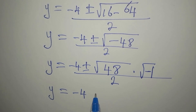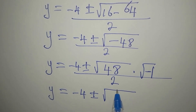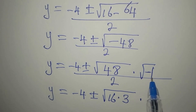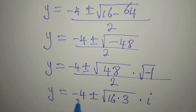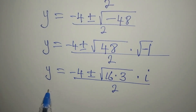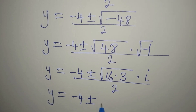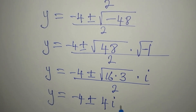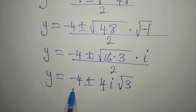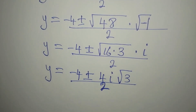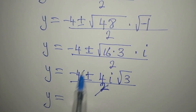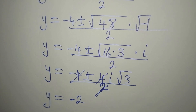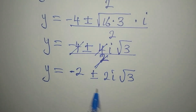The 48 under the square root has a perfect square factor: 48 equals 16 times 3. So square root of 48 is 4 times square root of 3, and square root of negative 1 is i. So we have minus 4 plus or minus 4i root 3, all divided by 2. Dividing through by 2, y equals minus 2 plus or minus 2i root 3.